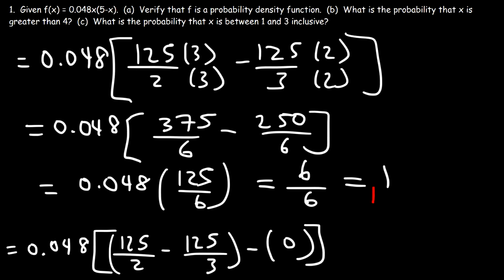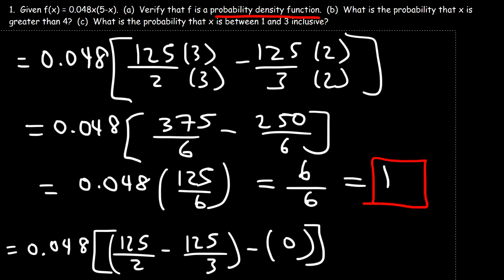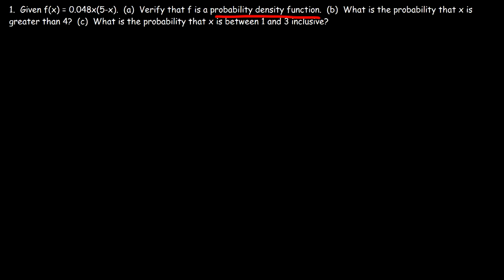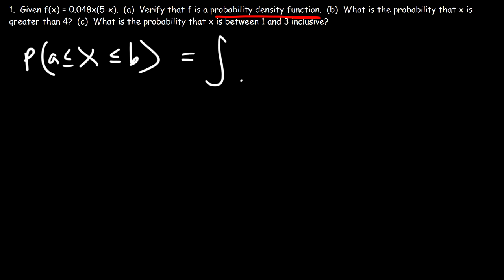So f is indeed a probability density function. Now let's move on to part B: what is the probability that x is greater than 4? To find the probability that x is between a and b, we evaluate the definite integral from a to b of f of x dx.